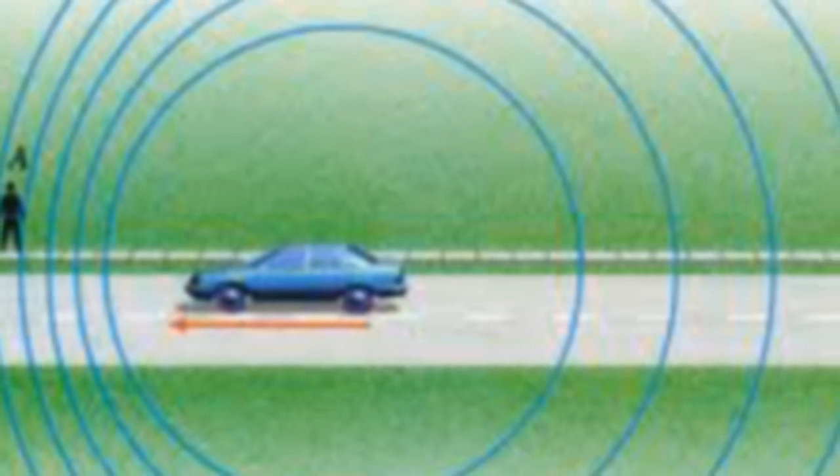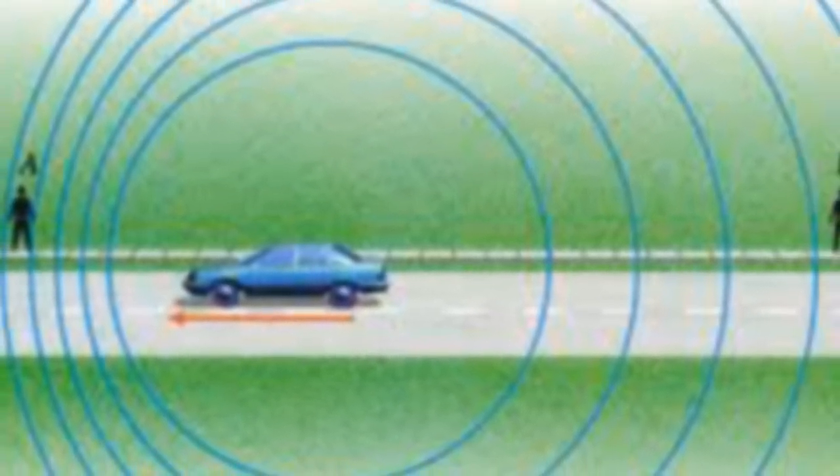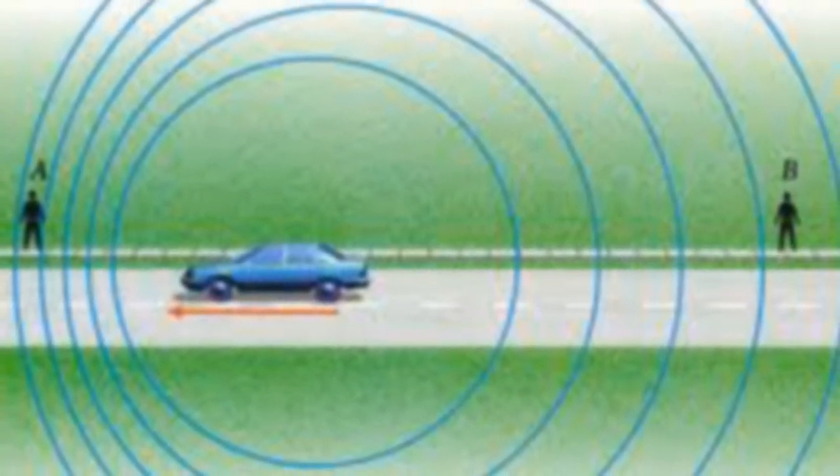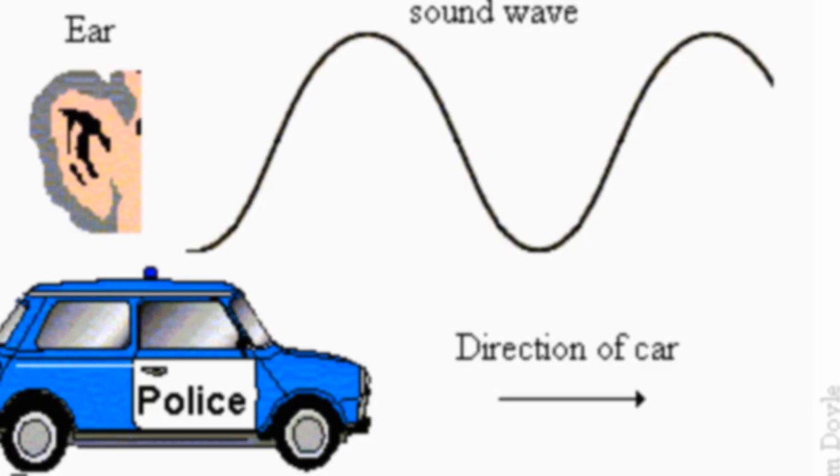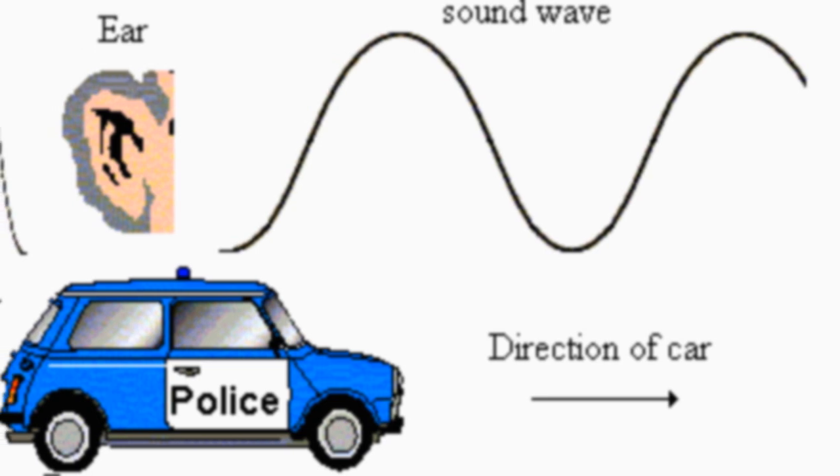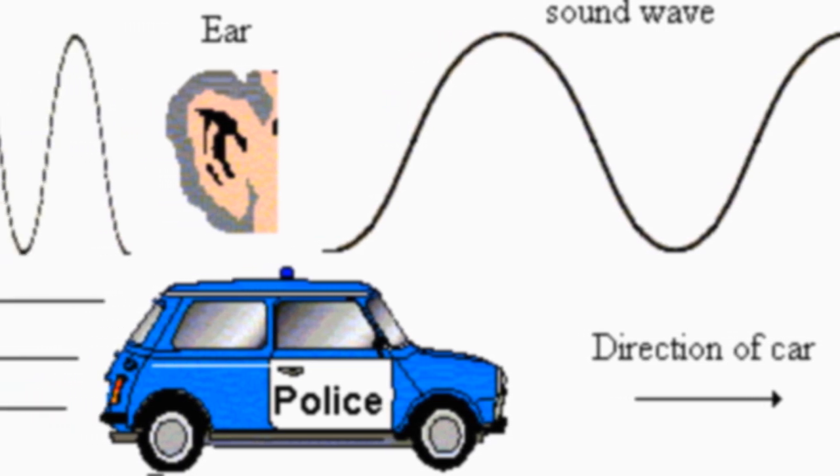The Doppler Effect is the change in frequency of a wave for an observer moving relative to its source. For sound, this is obvious when a car passes by. As the car approaches, it has one tone. As it passes by, there is a notable shift to a lower tone.